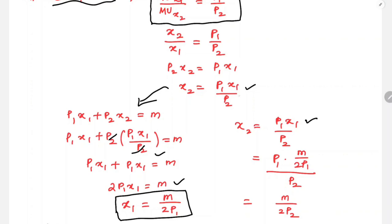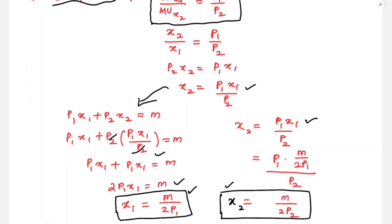Similarly, x2 = M / (2p2). So x1 = M/(2p1) and x2 = M/(2p2). These are the Marshallian demand functions. x2 is directly proportional to money income and inversely proportional to price.